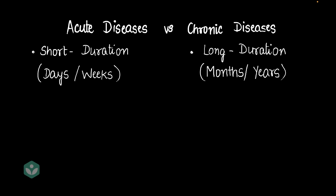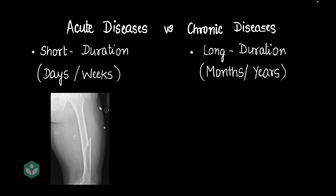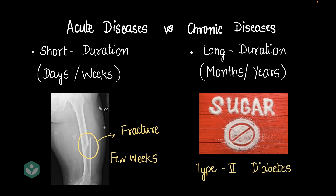Let me show you a few examples of these two. A fracture is a short-duration disease. It takes a few weeks for the fracture to heal, maybe requires a cast or, at the most, a small surgery, and then the person is back to normal. Whereas if someone has type 2 diabetes, that lasts for years together and maybe even the entire lifetime of that person.